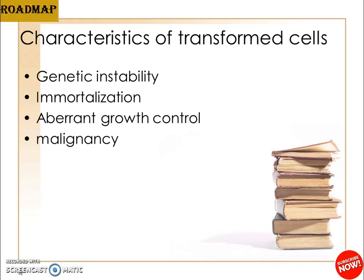Low serum requirement: transformed cells and tumor cells have lower serum dependence than normal cells. This is mostly due to the secretion of autocrine growth factors by the transformed cells, such as colony stimulating factor (CSF), transforming growth factor, and gastrin releasing peptide. These autocrine factors are produced during the active stage of cell proliferation.